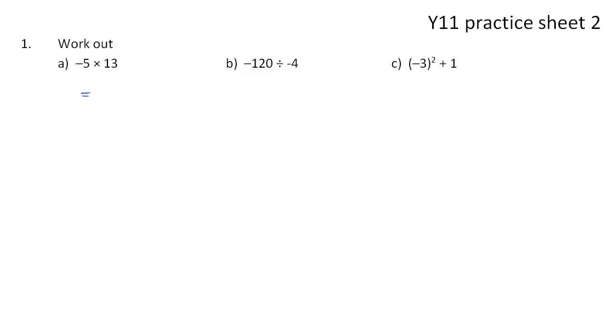So for 1a, we're doing -5 times 13. In my head, I would do that as 10 times 13, which is 130, and then half it to get 65. But of course, one of the values that we're multiplying is negative, so the answer is negative. So that's minus 65.